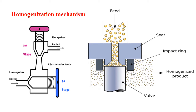Through these diagrams we can understand the homogenization mechanism. In the first diagram on the right side, we can see feeding of milk with larger fat globules passing through a seat and surrounding impact ring. From the bottom, there is a valve which provides the force. Through this narrow aperture, the milk is forced under high pressure and velocity, leading to breakdown of the fat globules, and the milk comes out with smaller fat particles. In the left side diagram, we can see a two-stage homogenizer: first there is entry of the product, then first stage homogenization, then it goes up for second stage homogenization, and finally the product goes out.